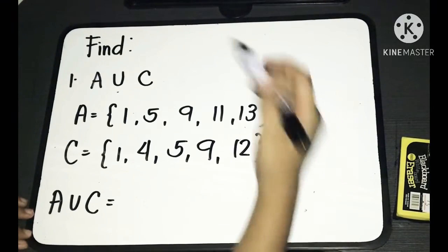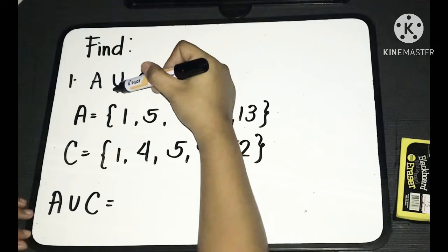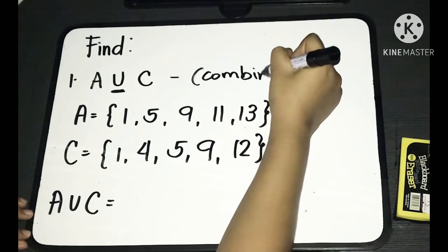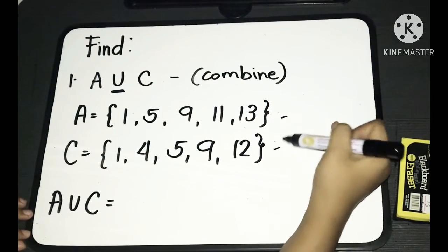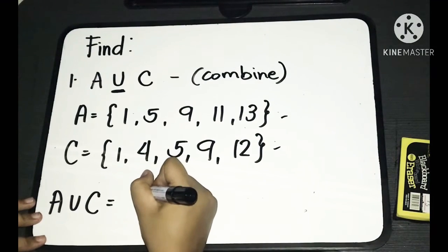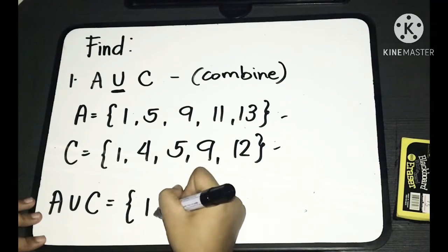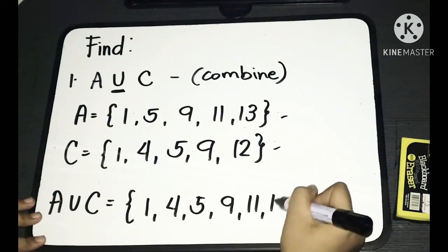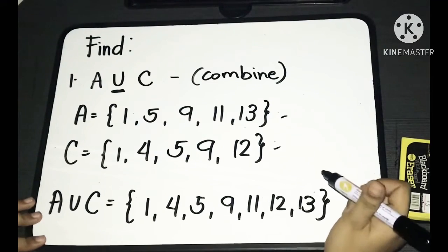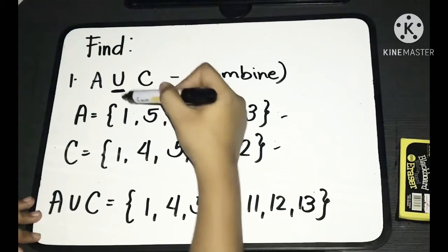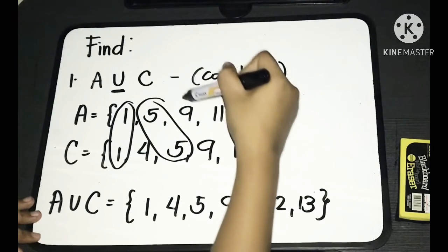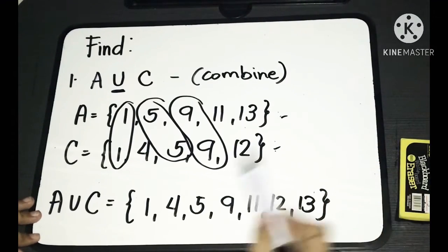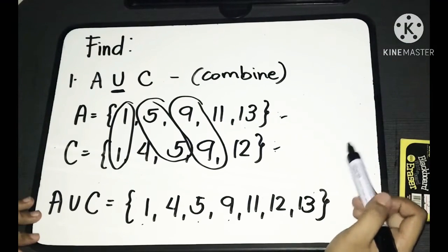We are to find A union C. As you can recall, if the operation is union, we're just going to combine the elements we have on the given sets. Combining the elements in A and C, A union C will have 1, 4, 5, 9, 11, 12, and 13. As you may notice, elements 1, 5, and 9 are present in both A and C, so you just write it once in the final answer for union.